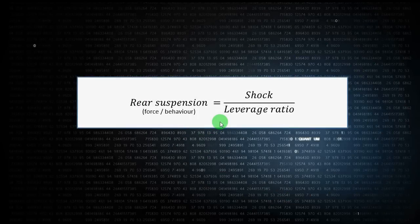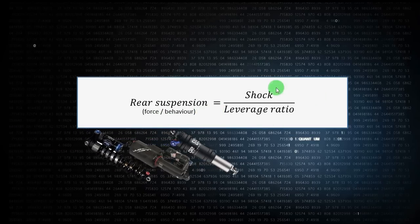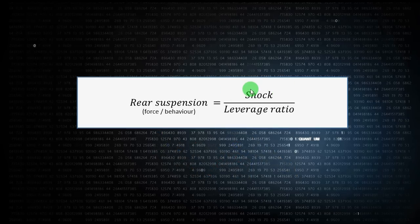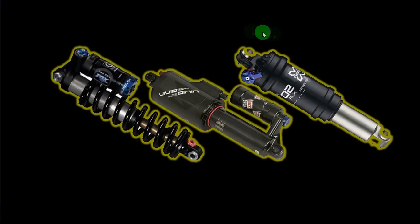Going back to the initial equation for the last time: now that you know the rear suspension behavior is a compromise between shock forces and leverage ratio, and since you already know what leverage ratio is, I will finish this video explaining the types of shocks and shock forces. There are two main types of shocks: coil shocks and air shocks. Within the air shocks, we have small volume air shocks and large volume air shocks. The coil shock is typically a linear shock, the small volume air shock is a progressive shock, and the large volume air shock is a mix between the two.